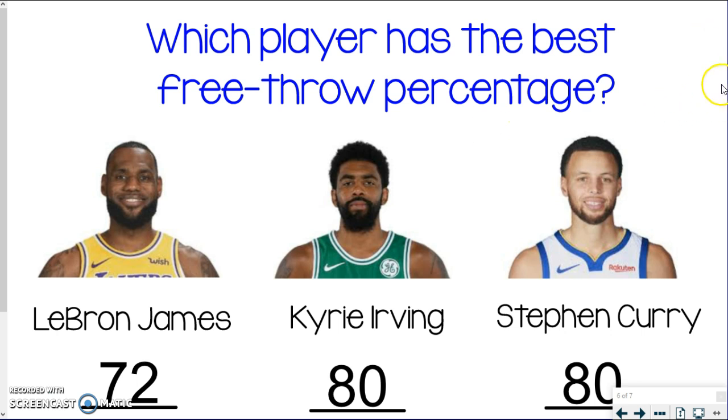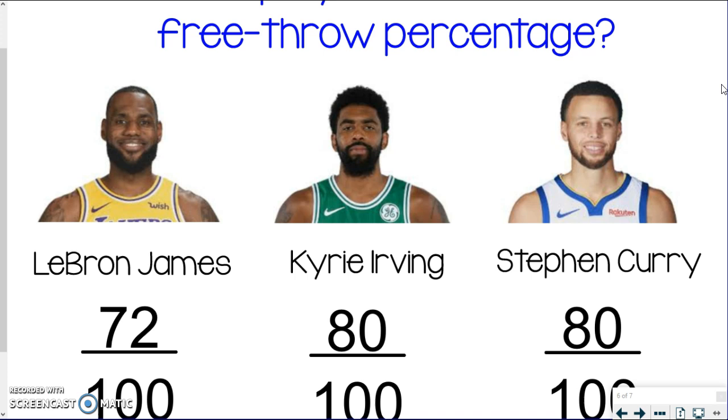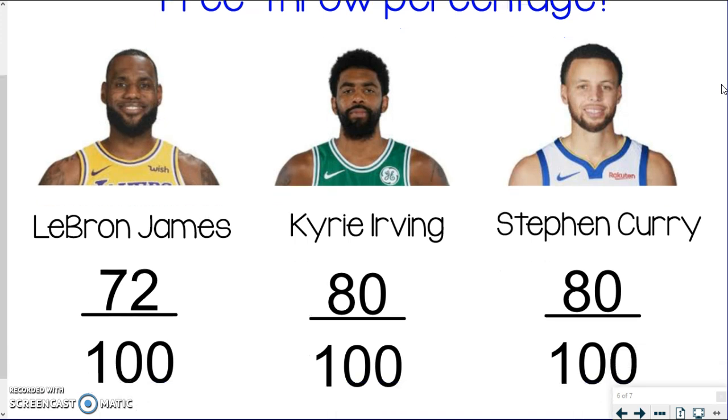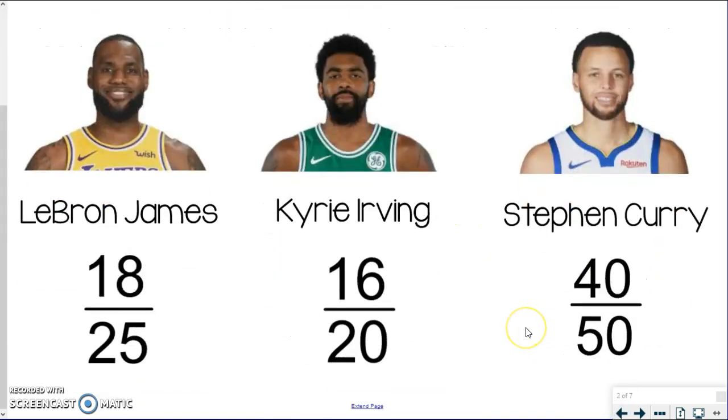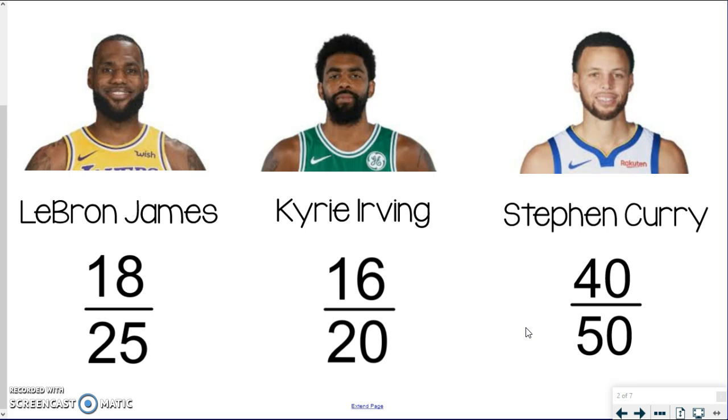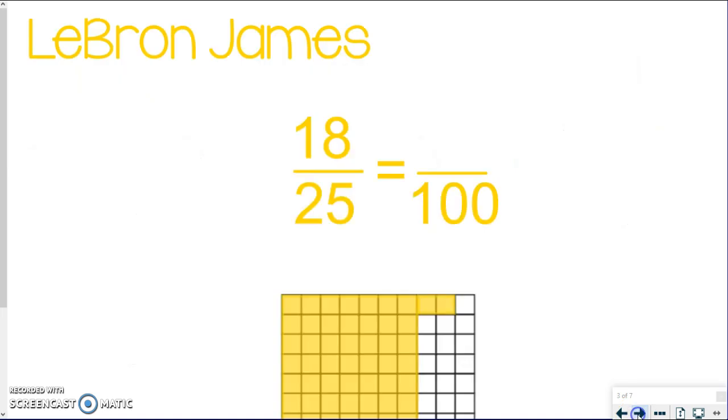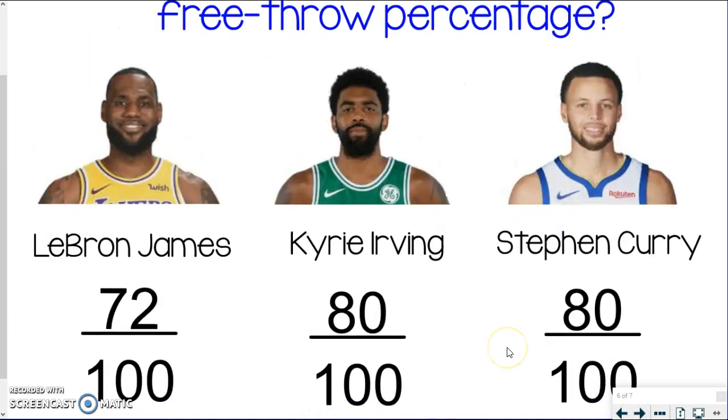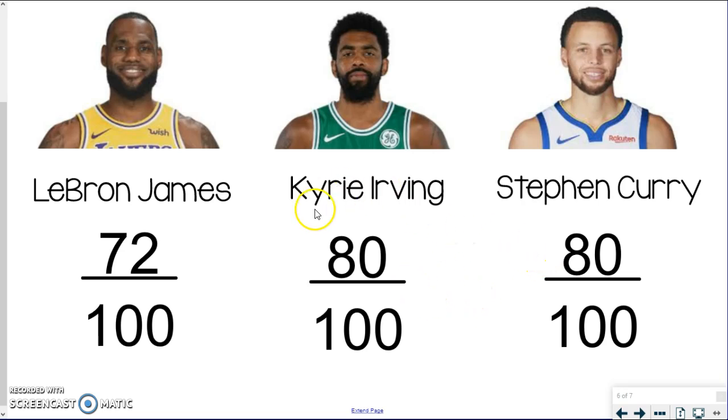So which player has the best free throw percentage? I'm curious if you kind of predicted at the beginning if you were correct or not. But I'm sure it would have been hard for you to tell that Kyrie and Steph had the exact same percentage. If I click back here real quick to the original one, I don't know if some of you would have thought that. Now maybe you did. Maybe you realized the connection. But regardless, it's very difficult to tell in this form with their original ratio. So when we get it out of 100, we can easily compare those percentages and clearly see that there is a tie between Kyrie and Steph. So they have the same free throw percentage. LeBron not too far behind, but his is a little lower in this case. At least with this ratio they gave us.